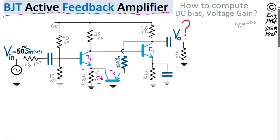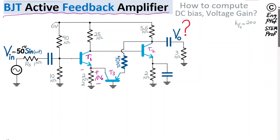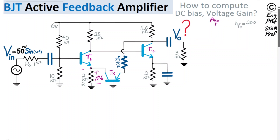This is T1, T2, and T3. I'd like to do a quick DC bias analysis and then show a quick way to compute the feedback voltage gain — the amplifier voltage gain Avf given the feedback network.